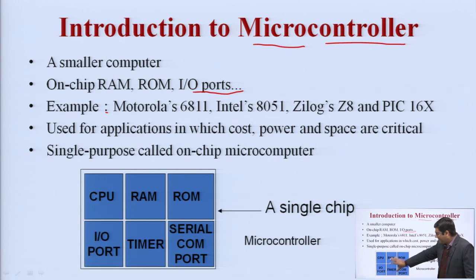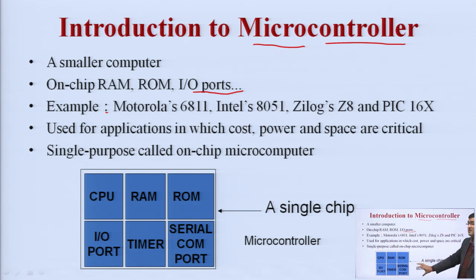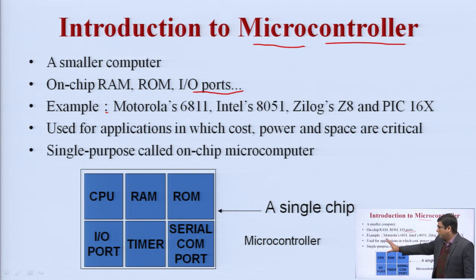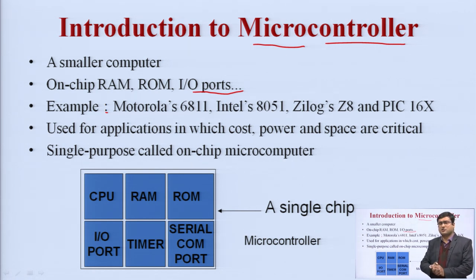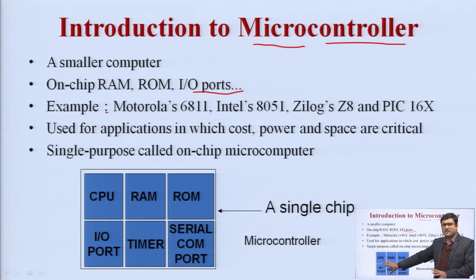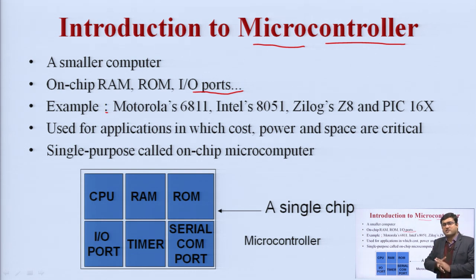As you can see in the diagram, CPU, RAM, and ROM — all devices are integrated on the same chip. That is why it is called a single chip microcomputer. Examples of microcontrollers are Motorola 6811, Intel 8051 (the most prevalent microcontroller in the series), ZLOG Z8, and PIC microcontroller families. Microcontrollers are fabricated using VLSI technology. There are various types available based on size, number of bits, architecture, and processing speed. They are used in applications where cost, power, and space are critical, since all components are integrated on the same chip, making hardware requirements and power consumption less.